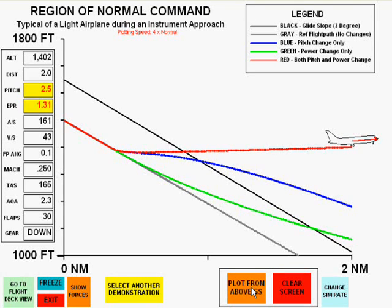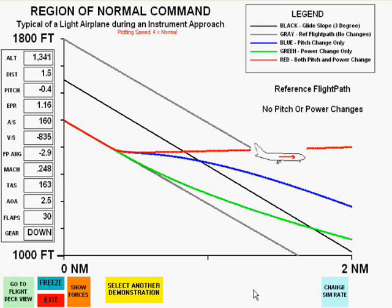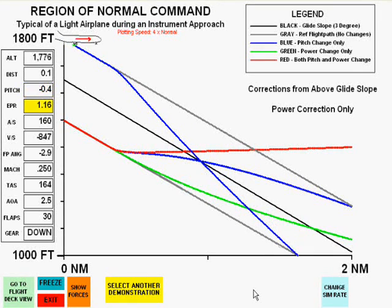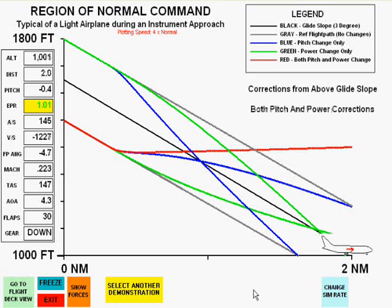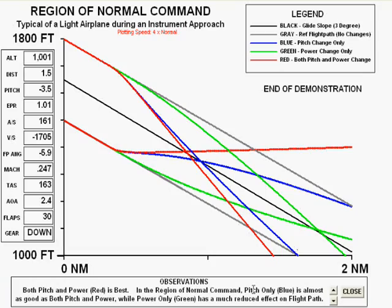We will now change the plot so that we fly from above the glide slope, with the first plot being parallel to the glide slope with no pitch or power changes. The first change will be with pitch only — notice the rapid change in flight path that drops off in time. Next will be the power only change, and again a much slower response in flight path. And lastly, the best of the three is pitch and power together, which changes the flight path and does not drop off.